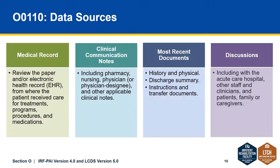Here is a list of some of the data sources that can be used to complete these items. These might include the medical record, whether paper or electronic health record, from wherever the patient received care that included these treatments, programs, procedures, and medications. You can also include clinical communication or notes — from the pharmacy, nursing staff, or documentation from the physician or physician-designee. You might also include recent documents such as the patient's history and physical, a discharge summary, or any transfer documents. And the last data source would be any discussions with hospital staff, the patient, their family, or perhaps their caregivers.